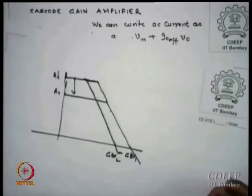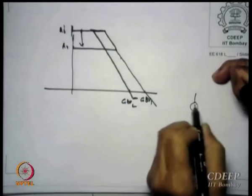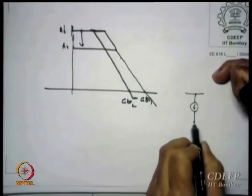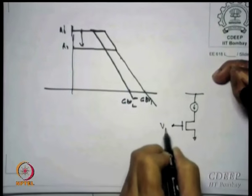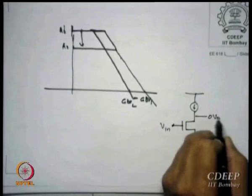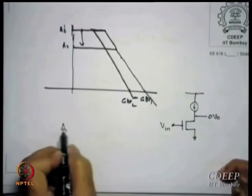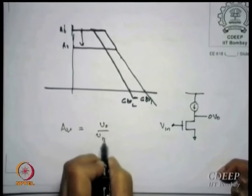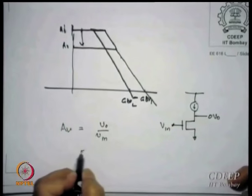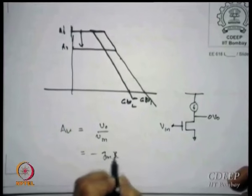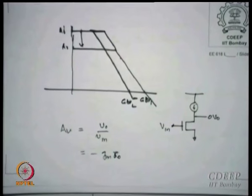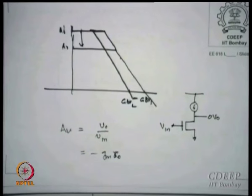A simple amplifier we have discussed already can have a current source load or whatever biasing you wish. This is your Vin, this is your Vout, and the gain V0/Vin typically comes out as minus gm times R0 — we have derived this earlier. Now what I am going to do is: the cascode has more than one transistor in series, so I will find gm_effective and Ro_effective such that the gain remains gm_eff × Ro_eff.